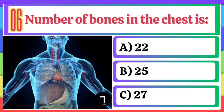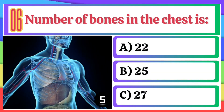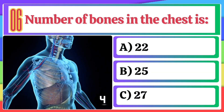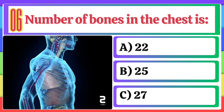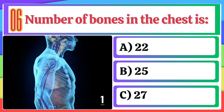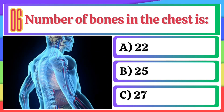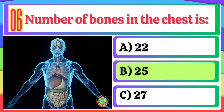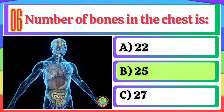Number of bones in the chest is: A) 22, B) 25, C) 27. The correct option is B, 25.